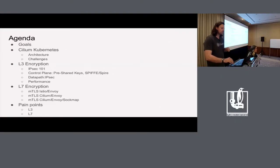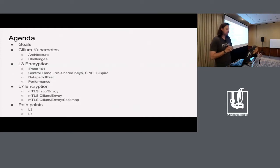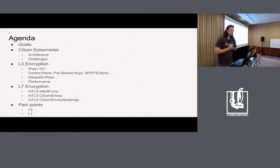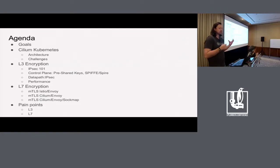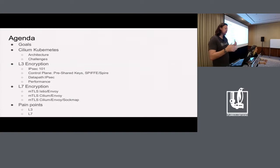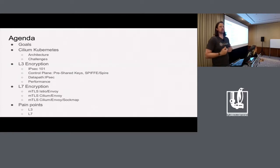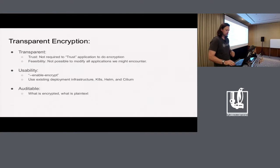Here's a quick agenda. First, we'll talk about what I mean by transparent encryption — why do we want it and what is it. Then a brief Cilium Kubernetes overview, just enough to explain the rest of the pieces. Cilium has two options: L3 encryption using IPsec, and L7 encryption using MTLS. I'll highlight what is released and in production now, what is a prototype, and what is further out — stuff I'm working on and hoping to have working in the next handful of months.